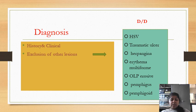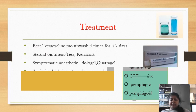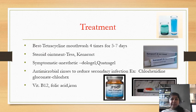The diagnosis is made by history and clinical examination. We have to exclude other similar conditions like herpes simplex viral infection, traumatic ulcerations, herpangina, erythema multiforme, oral lichen planus (erosive type), pemphigus, and pemphigoid.